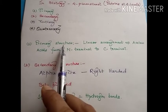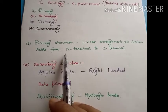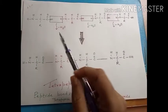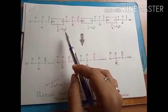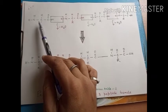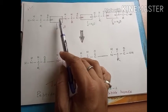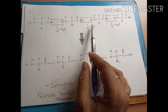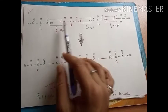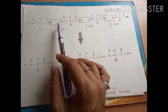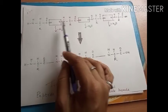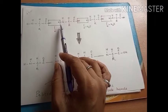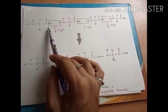The primary structure is a linear arrangement of amino acids from the N-terminal to the C-terminal. For example, four different amino acids have been shown here — the left end has the amino group and the right end has the carboxyl group. Proteins are condensation polymers formed by the elimination of one molecule of water between two amino acids, removing the OH from the carboxyl group and the H from the amino group, thus forming the peptide bond.